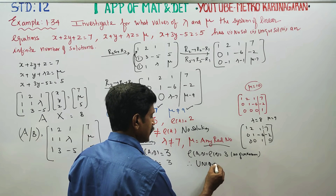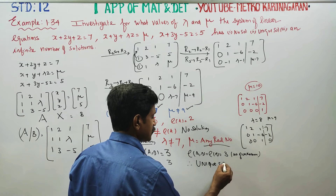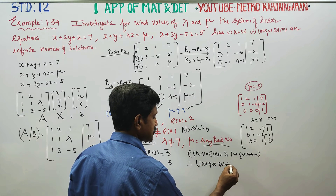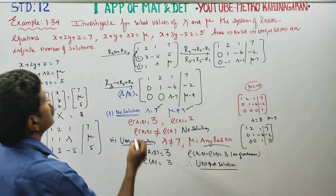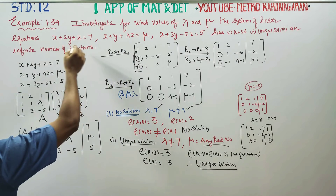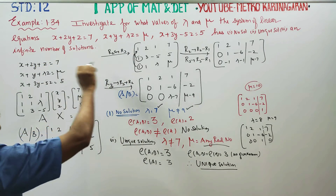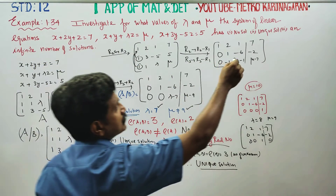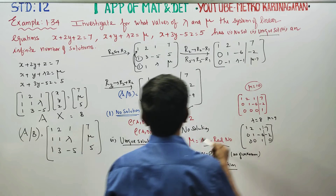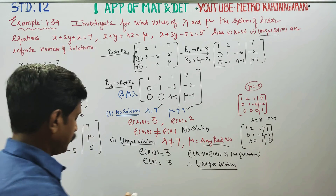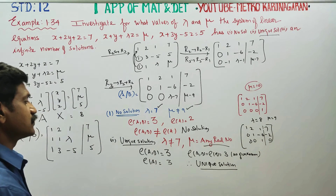Unique solution: the system is consistent and has a unique solution. So in the second case, we finish with the unique solution.